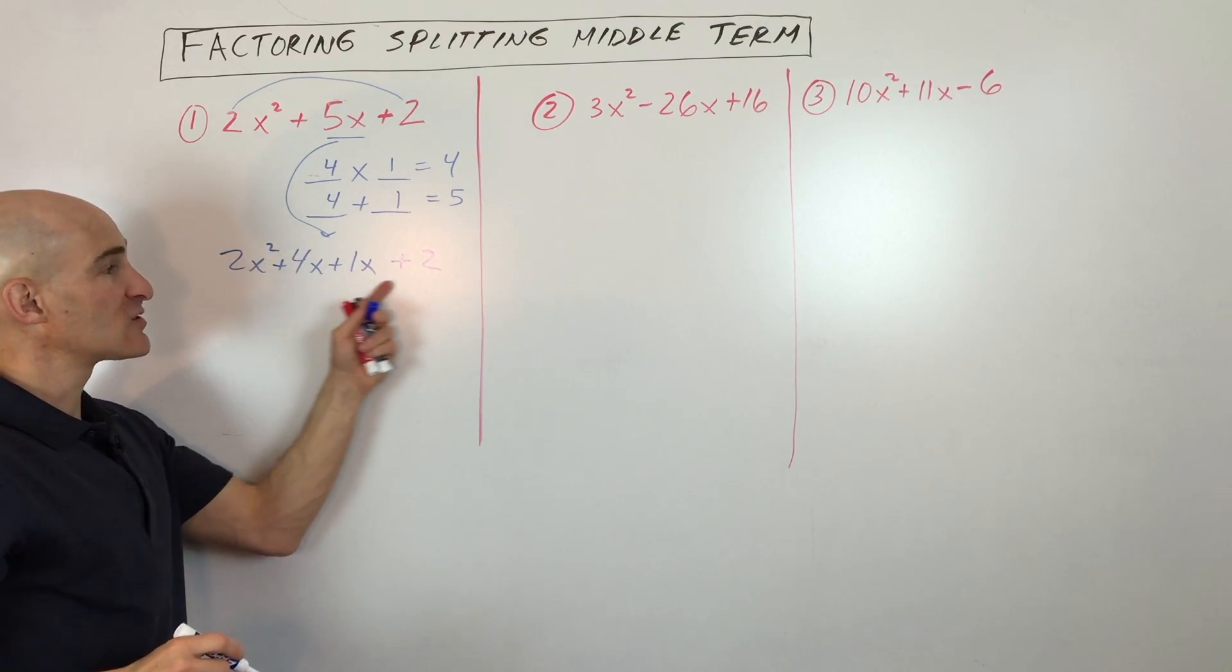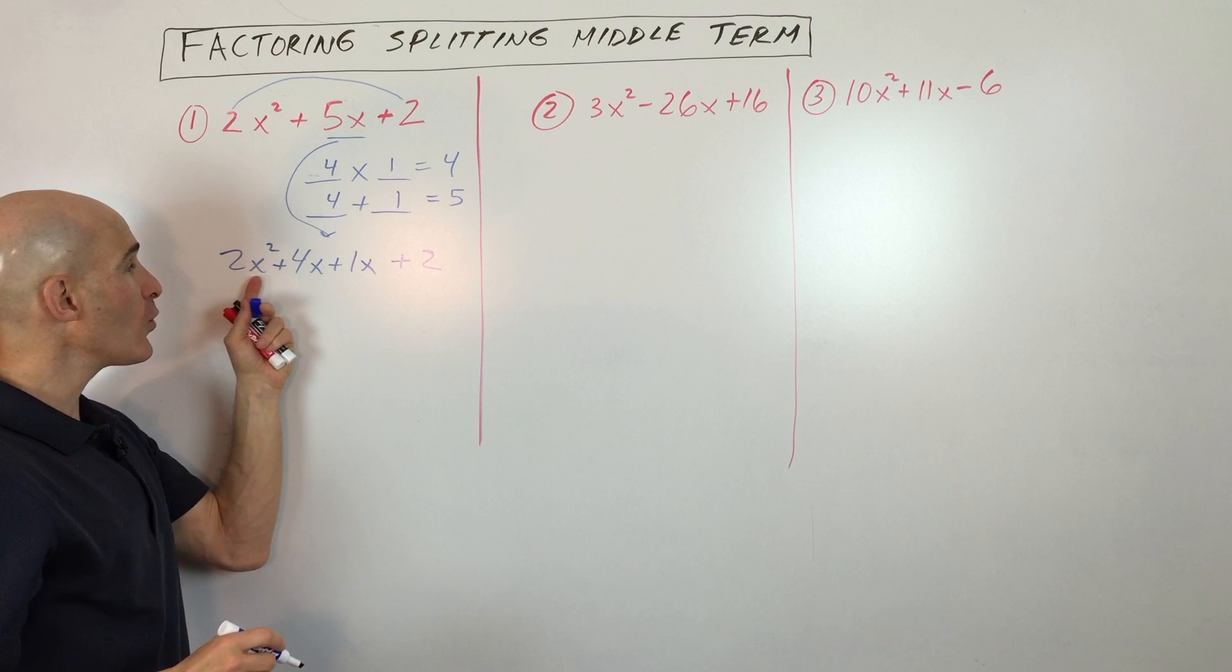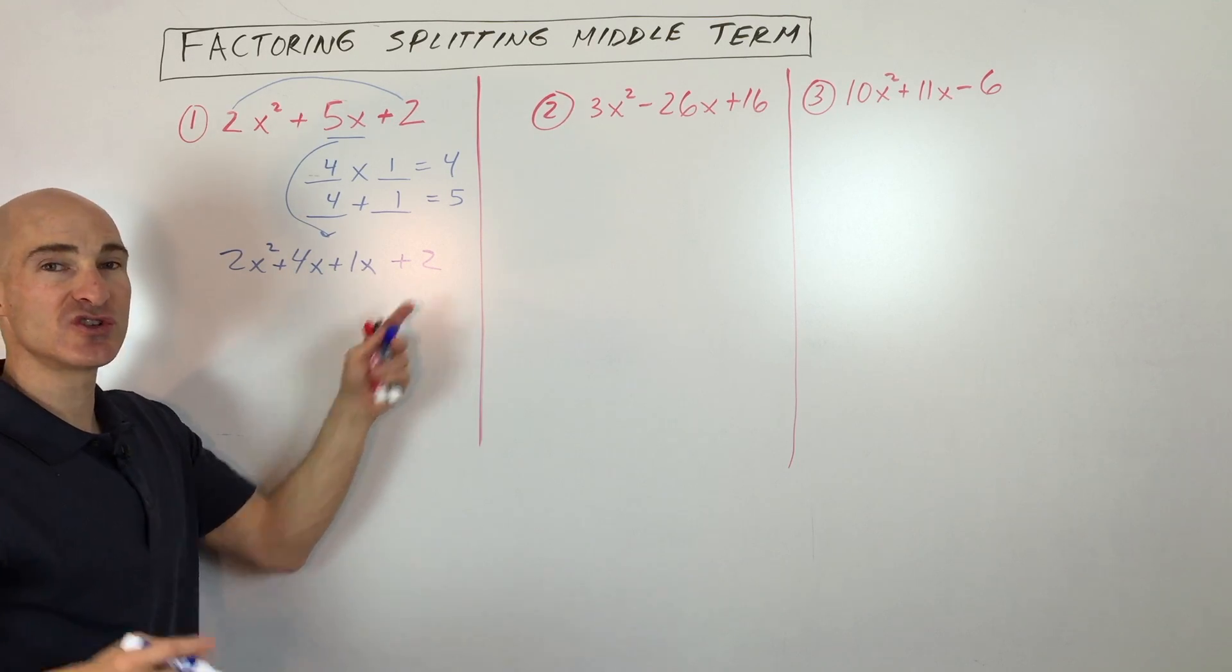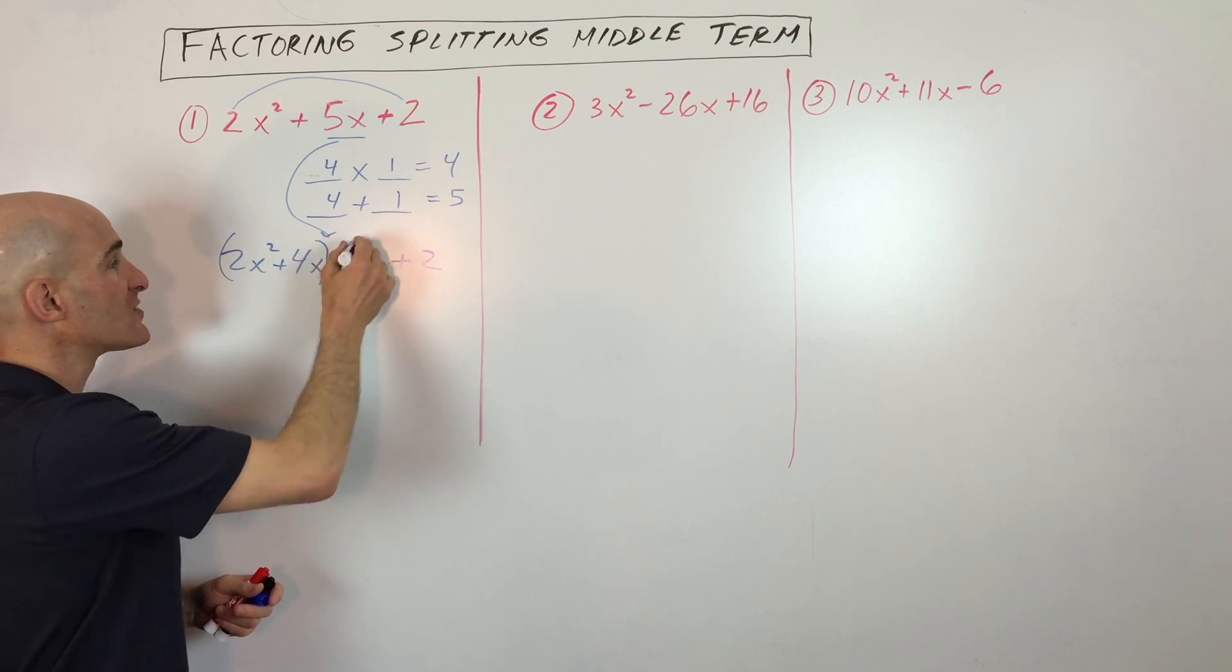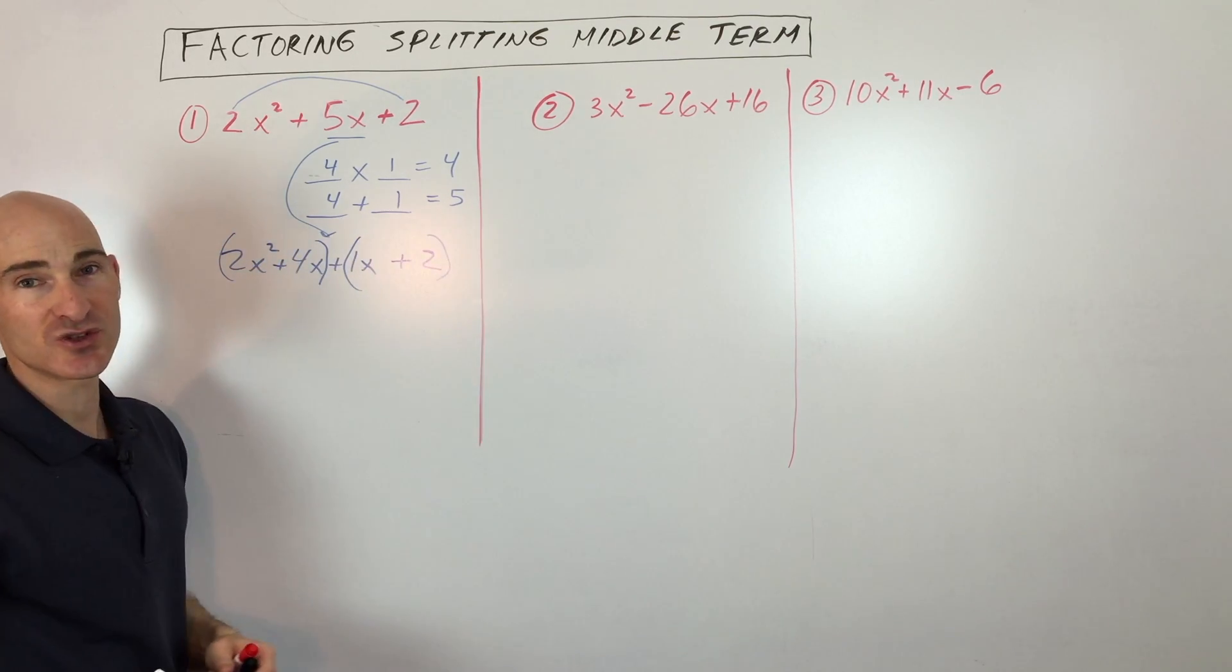So now what you notice is we have four terms. When you have four terms like this, what you can do is try the factoring by grouping method. What you do is put parentheses around the first two terms and put parentheses around the last two terms.